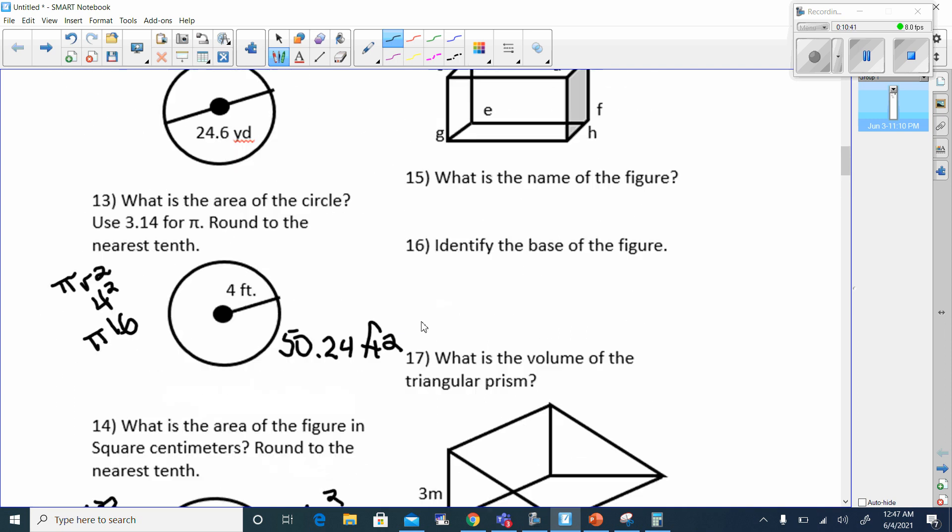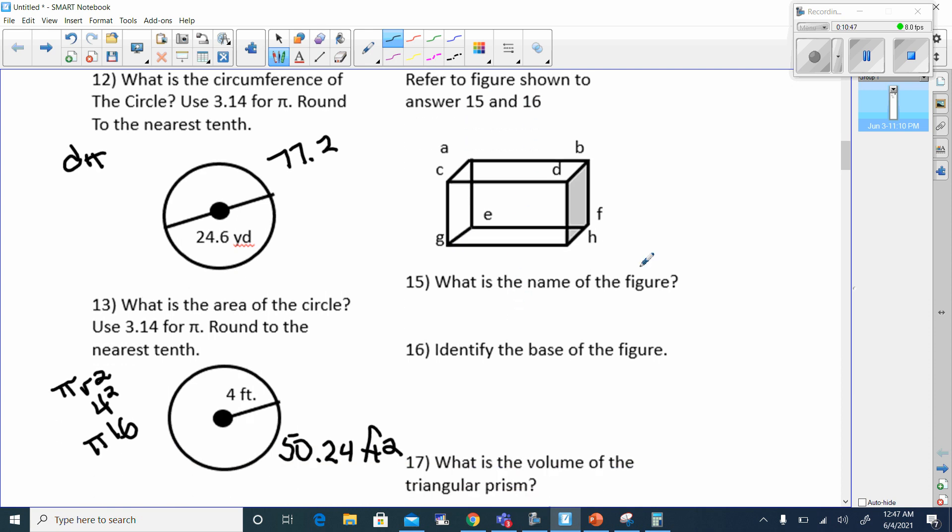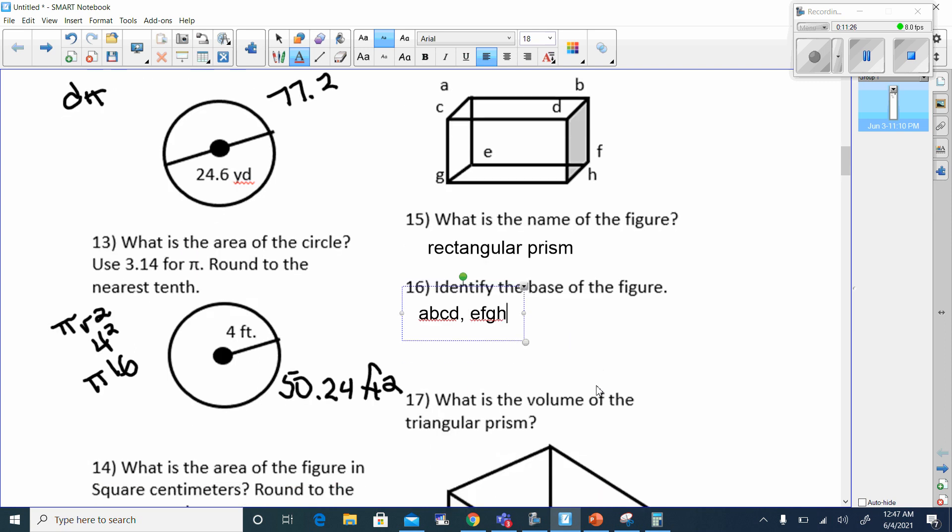And since this is area, this would have been feet squared. Let's go to number 15 here. Refer to this figure for 15 and 16. What is the name of this figure? This is a rectangular prism. And identify the base. What has two bases? A, B, C, D, and it also has another one, E, F, G, H. Two bases there.